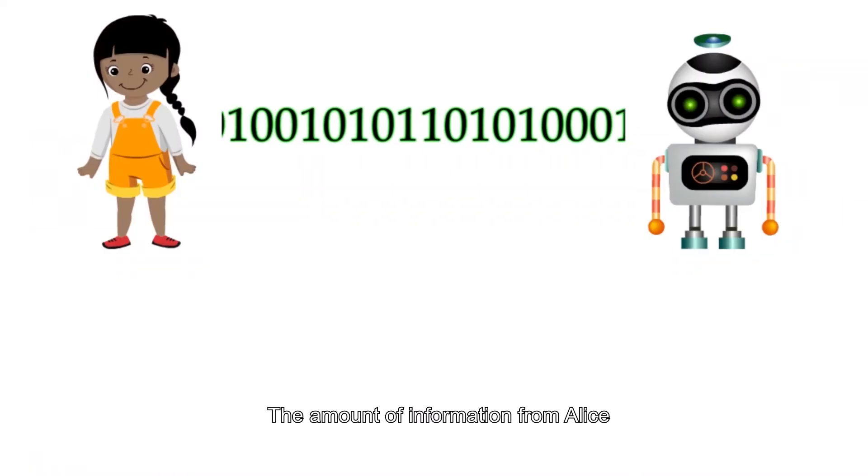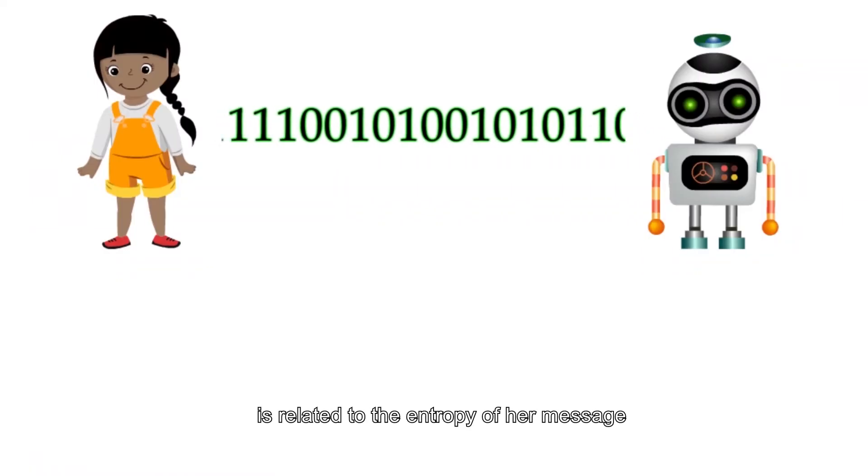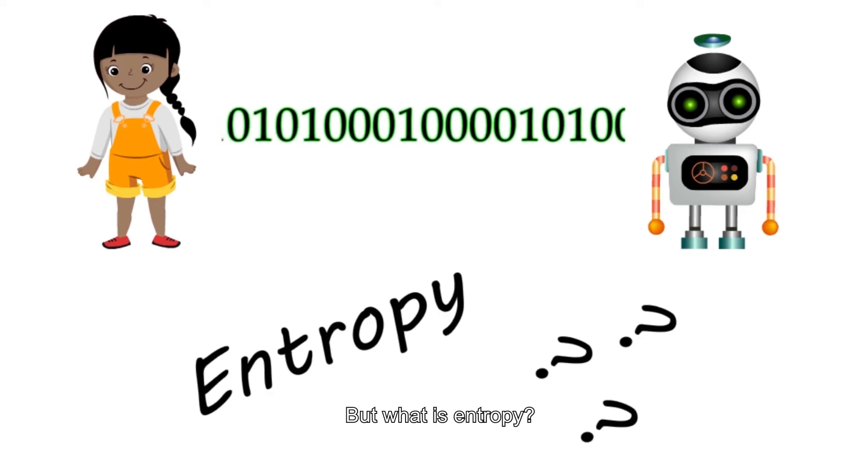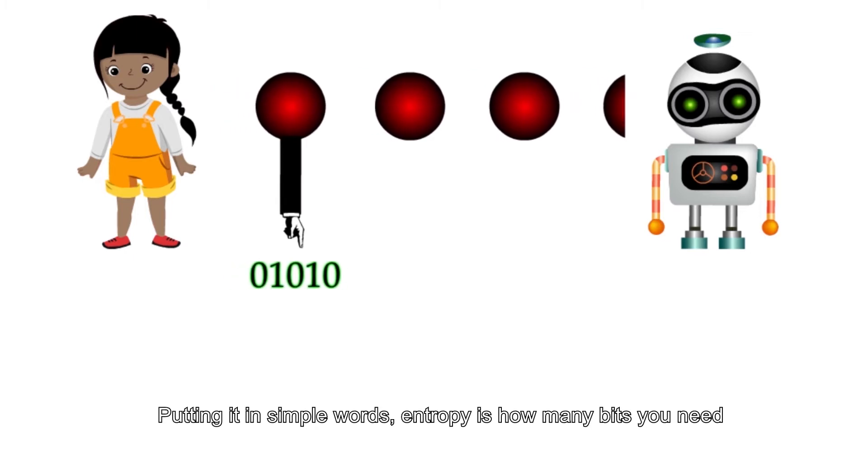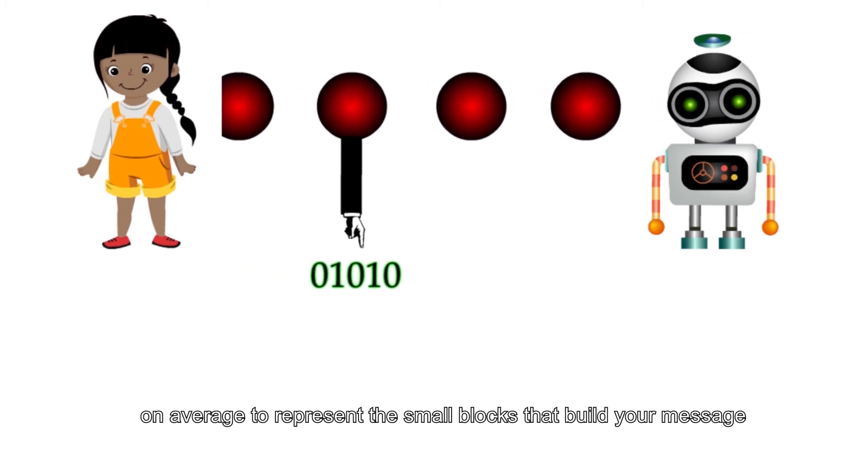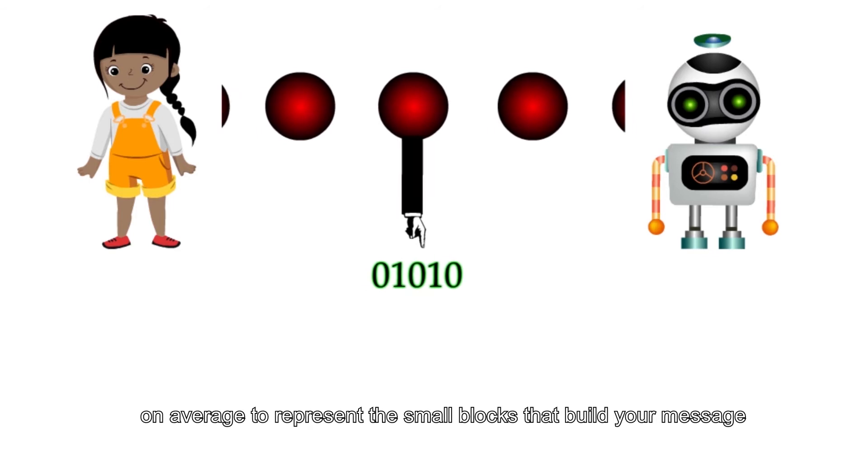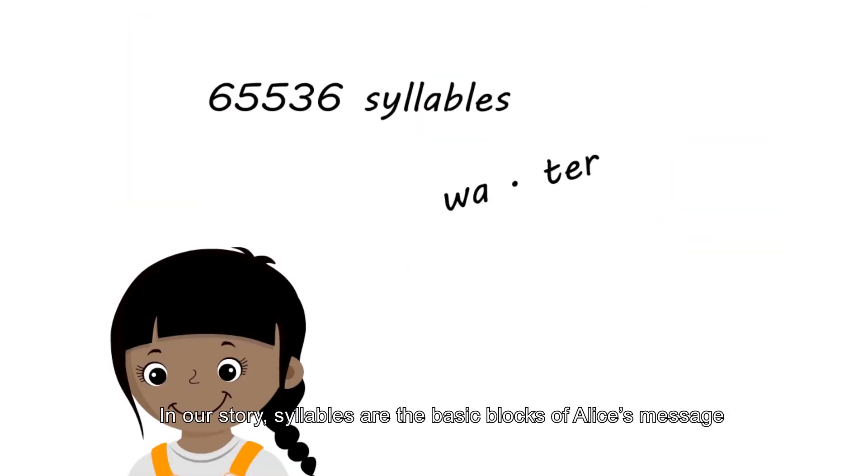The amount of information from Alice is related to the entropy of her message. But what is entropy? Putting it in simple words, entropy is how many bits you need, on average, to represent the small blocks that build your message. In our story, syllables are the basic blocks of Alice's message.